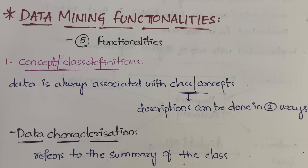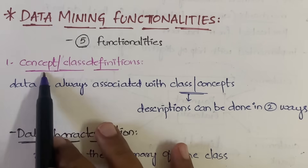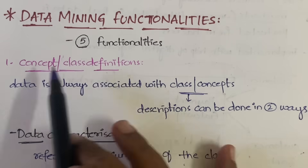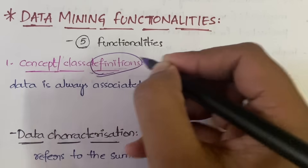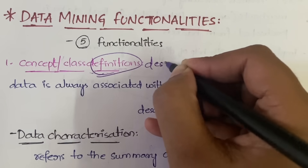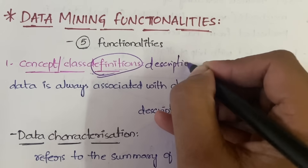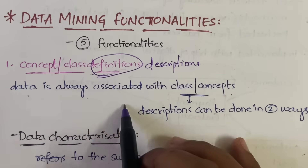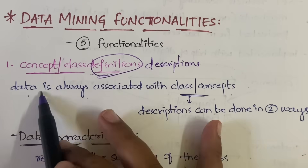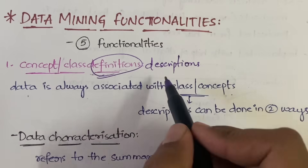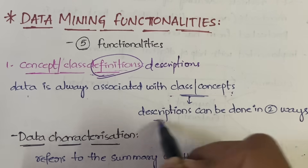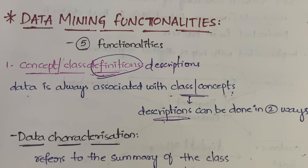Among the five functionalities, the first one is concept or class descriptions. Data is always associated with a class or a concept — whatever data we are storing or having is always associated with either a class or a concept. For these classes or concepts, we give a description, that is, we give an explanation.